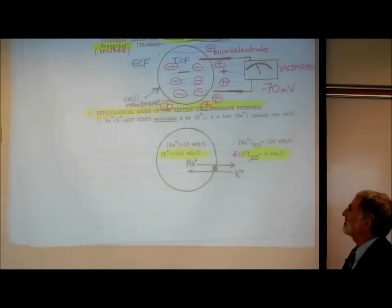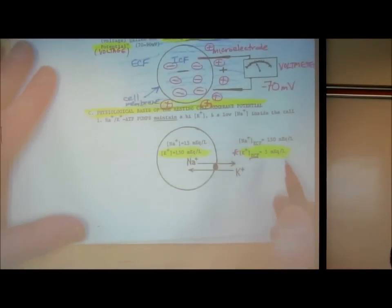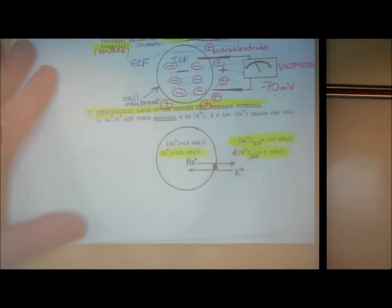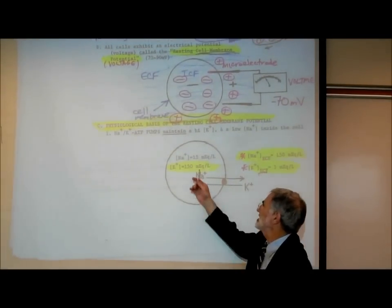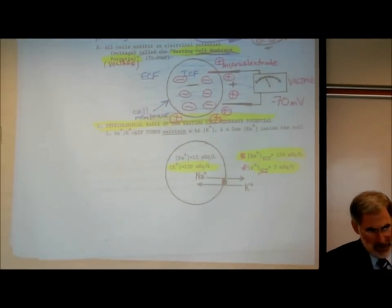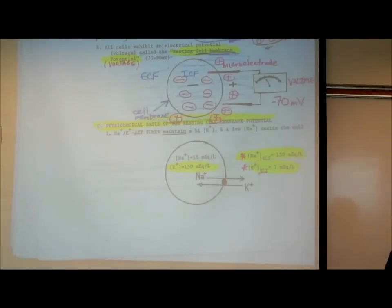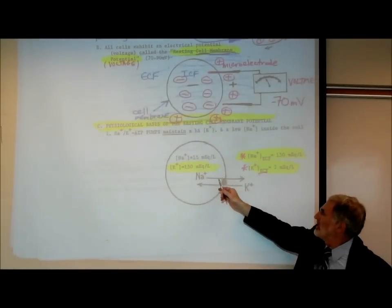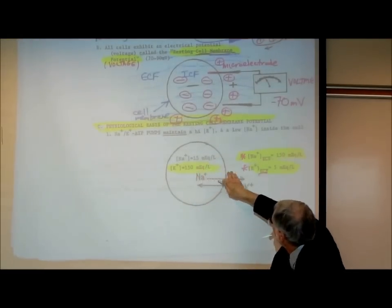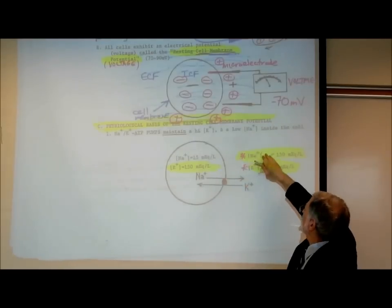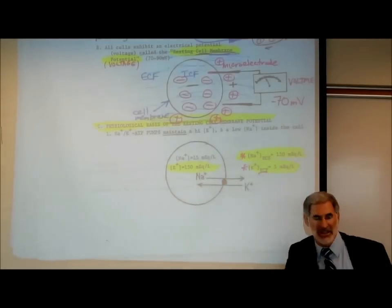The sodium is the second major important electrolyte. The normal sodium level in the extracellular fluid is 150 milliequivalents per liter — you must know that. The normal sodium level inside the cell is about 15 milliequivalents per liter. Clearly, most of the potassium is inside the cell but there's a little bit outside; most of the sodium is outside but there's a little bit inside.